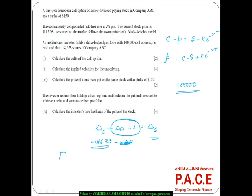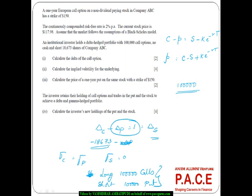The gamma of the call is the same as the gamma of the put, but gamma does not exist for the stock. So to make the portfolio gamma neutral, since I am long 100,000 call options, I should go short 100,000 put options. This makes the portfolio gamma neutral, because the gammas of the long calls and short puts cancel out perfectly.